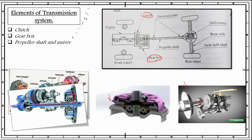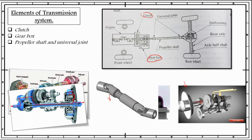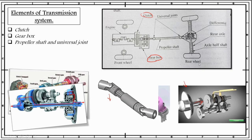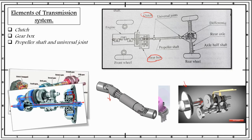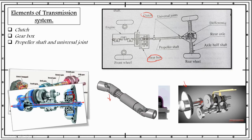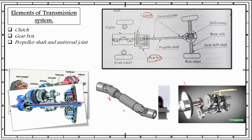Next is the propeller shaft and universal joint. They connect the gearbox to the final drive unit, which is the rear axle. The rear axle is suspended under the chassis with springs and moves up and down due to road irregularities, so the angle of the propeller shaft is varied. To provide a varying-angle drive to the rear axle, two universal joints are used with the propeller shaft. As we can see in this animation, these two universal joints are attached to the propeller shaft to accommodate the varied angles caused by road irregularities.